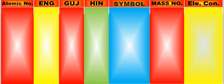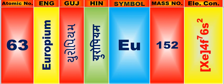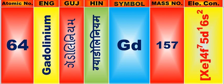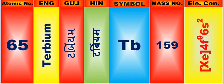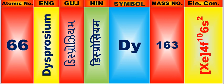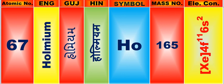Atomic number is 63, name of atom is Europium. Atomic number is 64, name of atom is Gadolinium. Atomic number is 65, name of atom is Terbium. Atomic number is 66, name of atom is Dysprosium. Atomic number is 67, name of atom is Holmium.